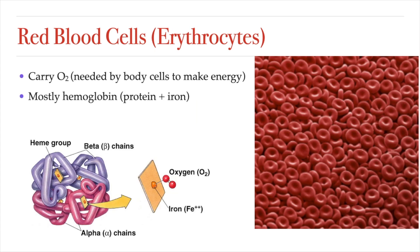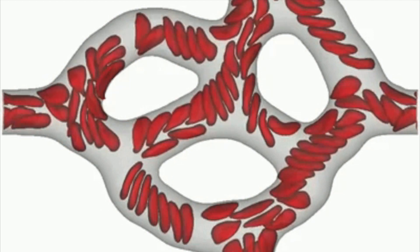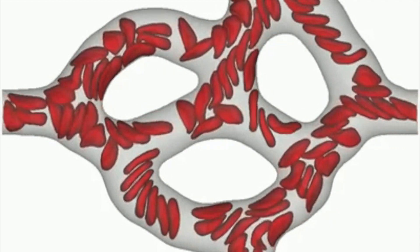Red blood cells are made mostly of hemoglobin, a protein that has iron as part of its structure and whose function is to carry oxygen. Red blood cells have a very distinctive biconcave shape, kind of looking like a flat disc. This shape is actually important because it gives red blood cells the flexibility to fit through the tiniest of blood vessels, often moving through tiny capillaries single file.